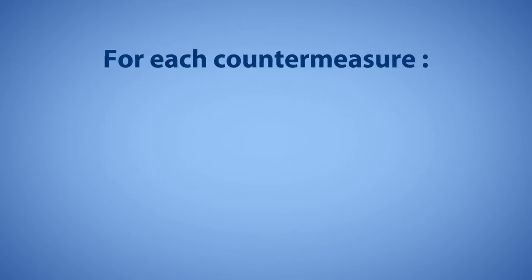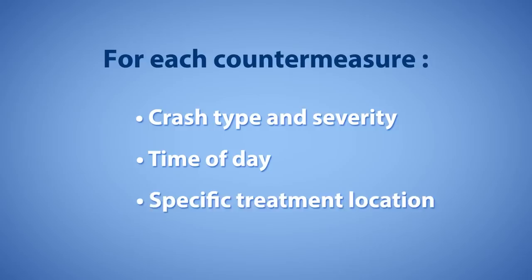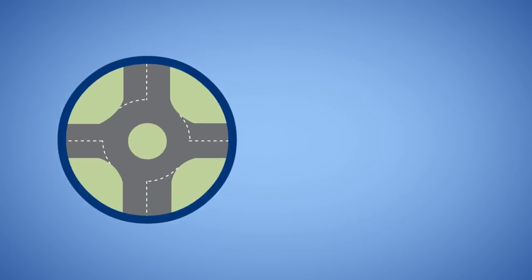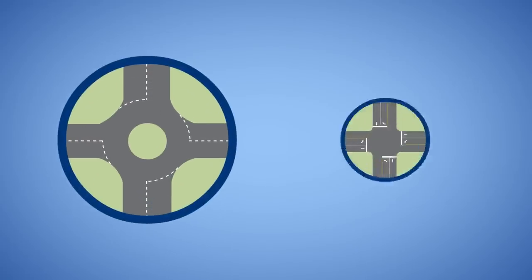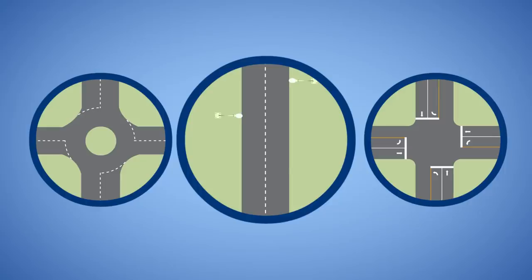This can include the roadway characteristics and traffic volume. Next, for each countermeasure, define the target crash type and severity, applicable time of day such as day or night, and specific portion of the road such as a curve to which the countermeasure will be applied. For example, if you plan to construct a roundabout at a stop-controlled intersection, this applies to the entire intersection at all times of the day. Or, if you install lighting along sections of a corridor, then it would only apply to those sections during the night.